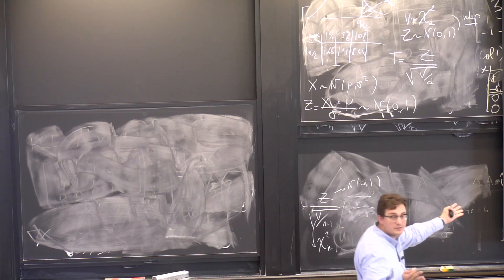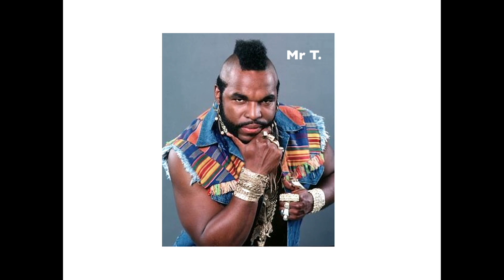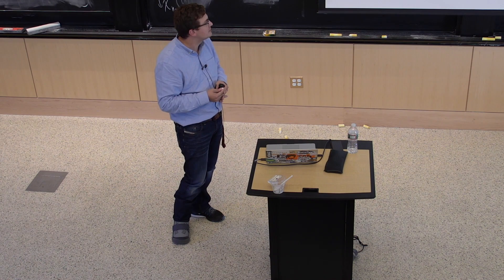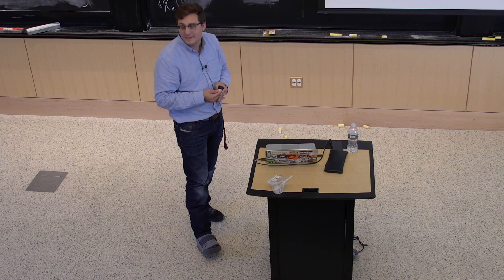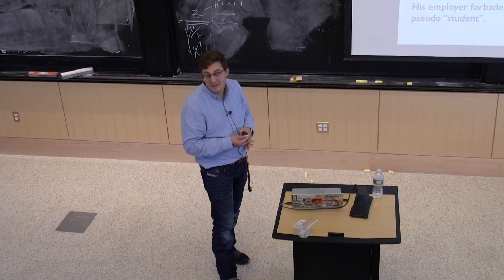Who is the Student t-distribution named after? It does not come from Mr. T. It comes from William Gosset, who worked at the Guinness Brewery in Dublin around 1908. Guinness wouldn't let him publish papers, so he used the pen name 'Student.' That's the guy who put his name — or pen name — on this distribution. Back then, it was not difficult to name a distribution after yourself.